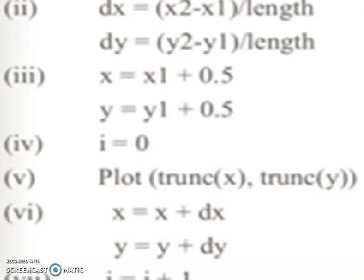Next step: initialize the value of i as 0. Next, plot truncation of x and truncation of y. Truncation means the lowest integer. If we have got 3.5, then we will take truncation of 3.5 as 3. Next step: x = x + dx, y = y + dy. Next step: i = i + 1, increment the value of i.